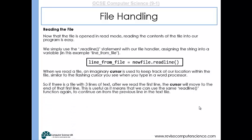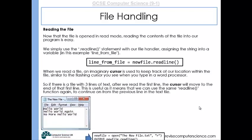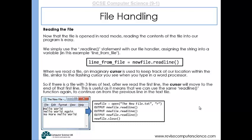If there's a file with three lines of text, after we read the first line, the cursor will move to the end of that first line. This is useful as it means we can use the same readline function again to continue on from the previous line of text. If we were to use the readline function three times on the file that we created a few slides back, we would be able to read each of those lines into our program and output them to the screen.